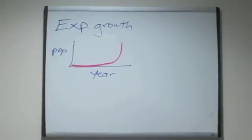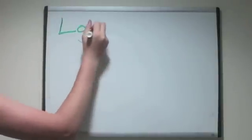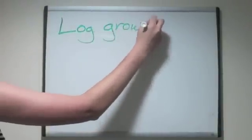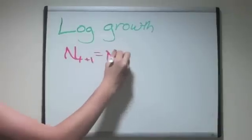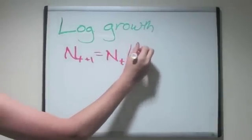Logarithmic growth, on the other hand, has limits to its population growth built in. This would occur in circumstances such as the growth rate being density dependent, and the growth gets smaller as the population, n, gets larger.